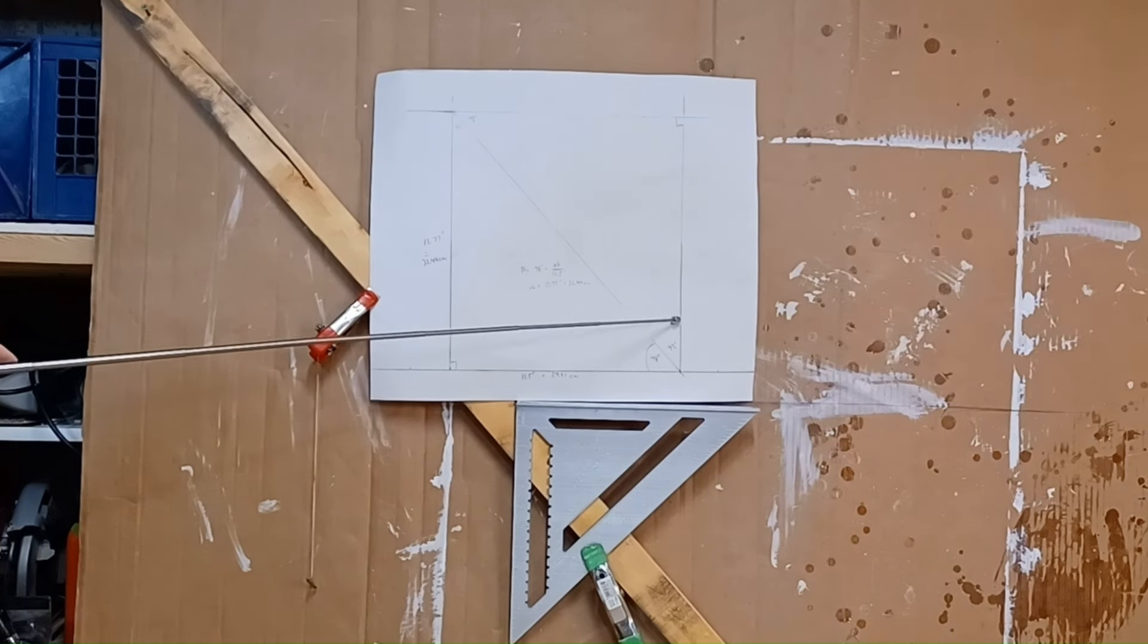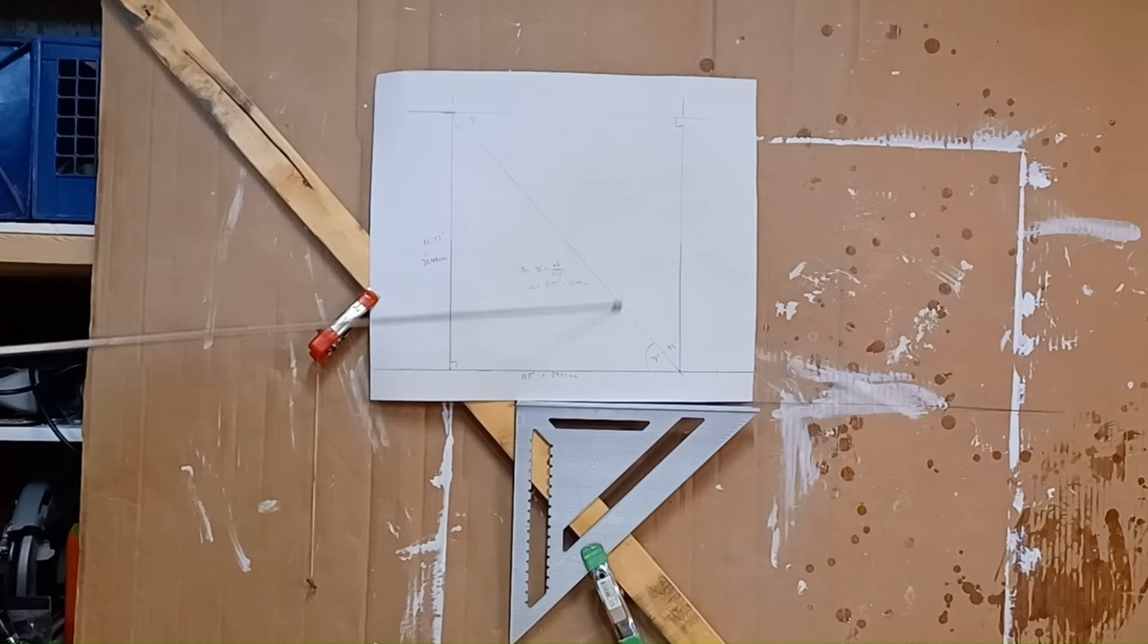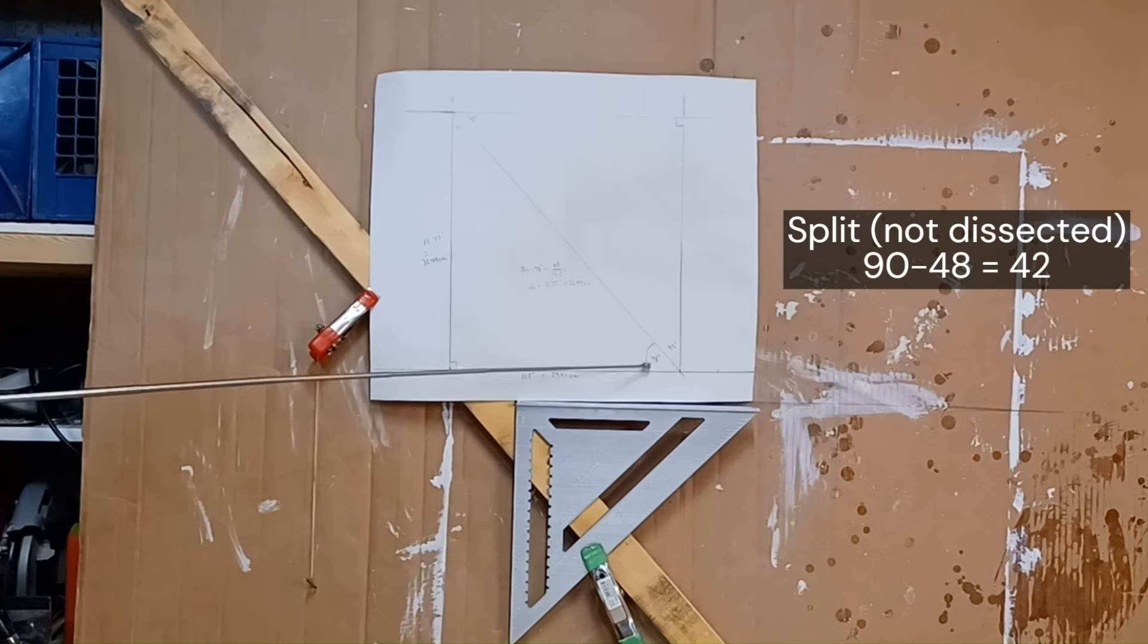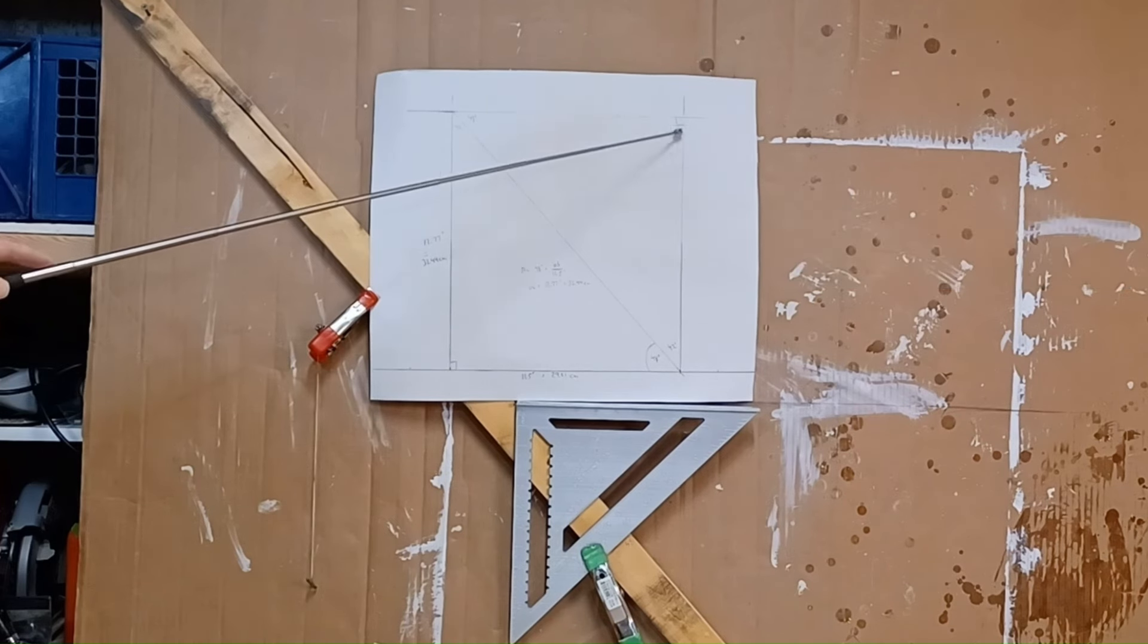And then that's the same thing at this 90 degree angle here. If it's dissected and part of it is 48, the other part is going to be 42. And then we have the same math here. 42 plus 90 minus 180 gives us our 48 degree angle here.